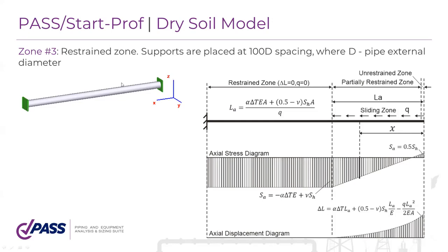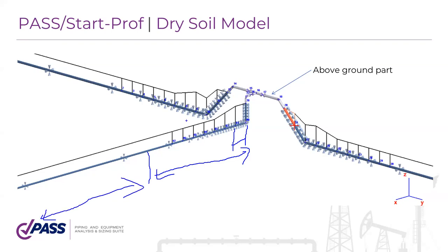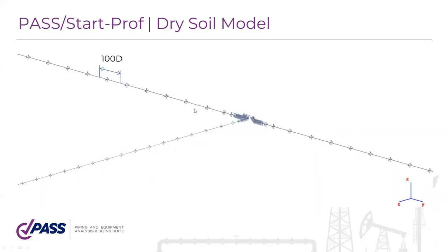This is a typical buried pipeline system that can contain both above-ground and underground parts. StartProf automatically decides where the lateral bearing zone, sliding zone, and restraint zone are located. You will see all types of zones, and you can see the soil springs placed along the pipeline. Let me show you this model in StartProf.